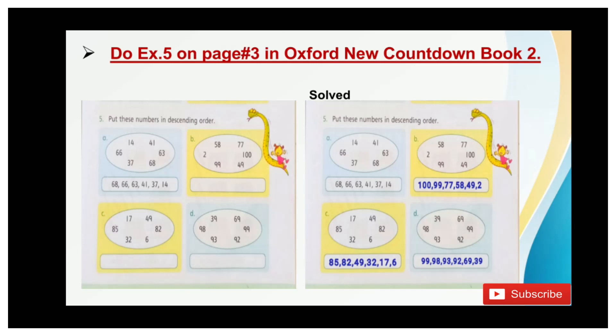Part D, the largest number is 99. And by following the decreasing order, there will be 98, 93, 92, 69, then 39.